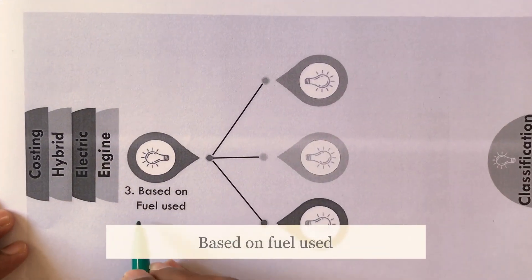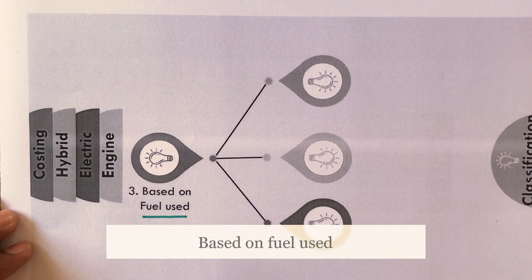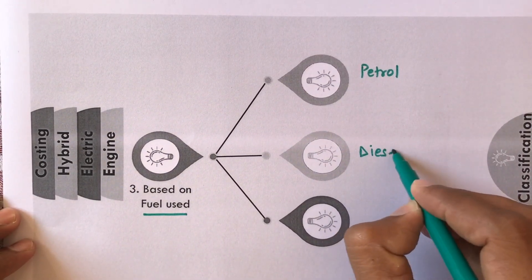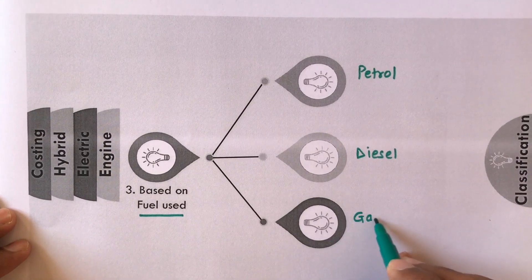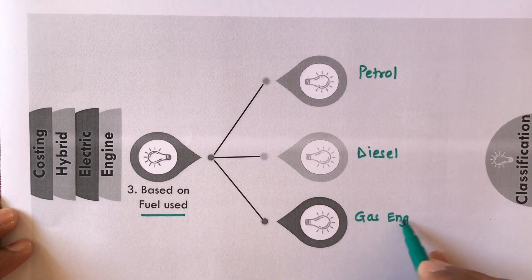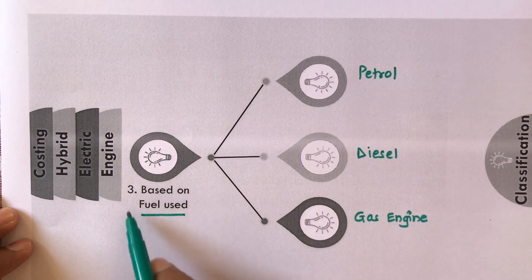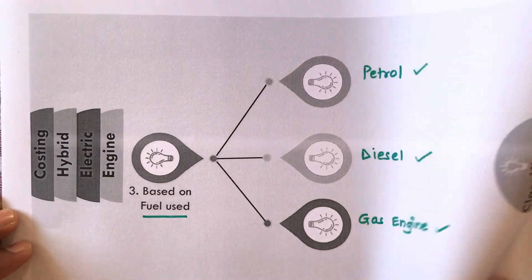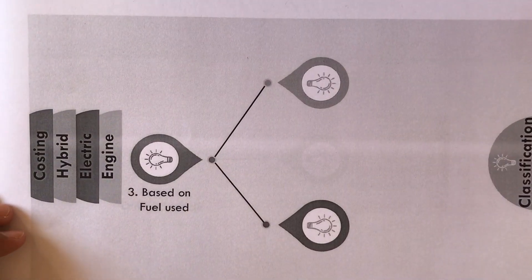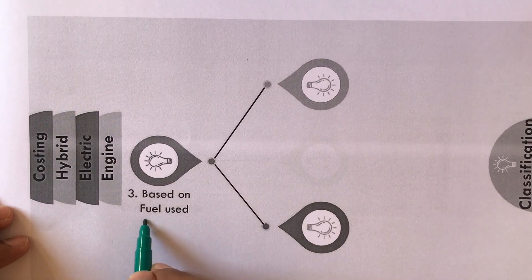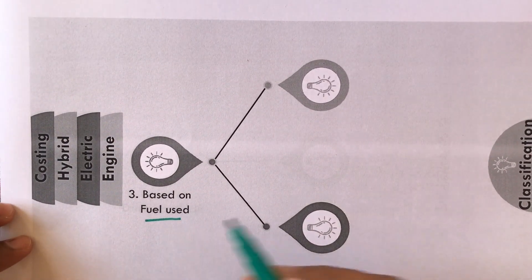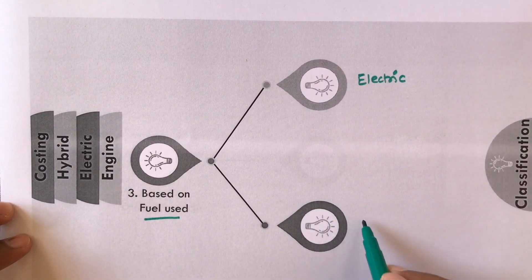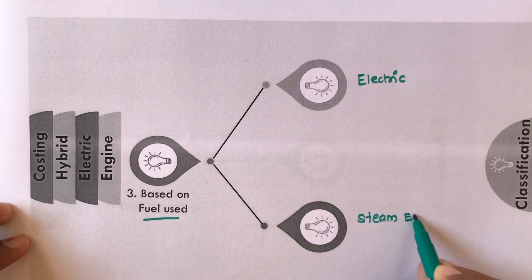The third basis of classification is based on the fuel used. That may be petrol engine vehicles, diesel engine vehicles, or gas engine vehicles. Further based on fuel use, vehicles may also be classified as electric vehicles or steam engine vehicles.